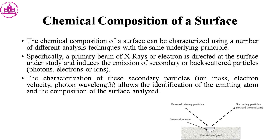The chemical composition of a surface can be characterized using a number of different analysis techniques with the same underlying principle. Specifically, a primary beam of X-rays or electrons is directed at the surface under study and induces the emission of secondary or back-scattered particles. The characterization of these secondary particles allows the identification of the emitting atom and the composition of the surface analyzed.